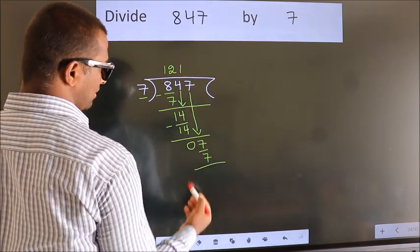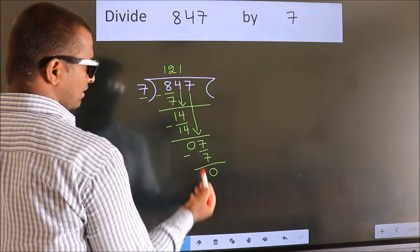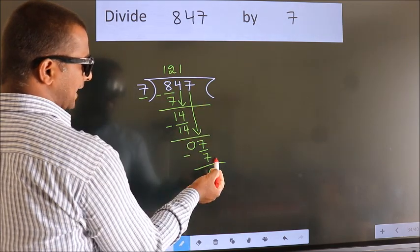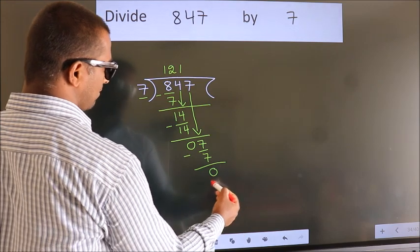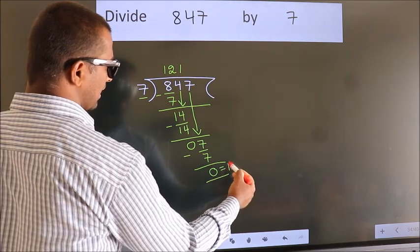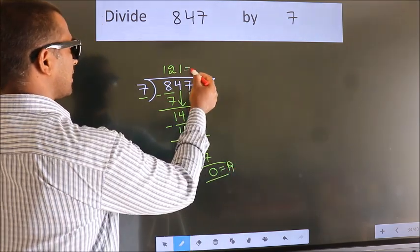Now we subtract. We get 0. No more numbers to bring it down. So we stop here. This is our remainder. This is our quotient.